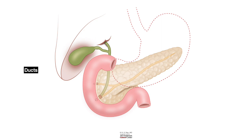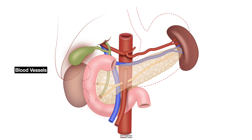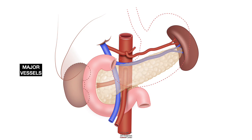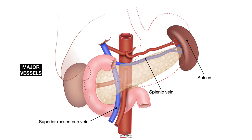Next, let us look at the blood vessels. We want to learn the relationship of all these blood vessels in relation to the anatomy of the pancreas — the head, neck, body, and tail. The spleen drains into the splenic vein, which courses along the superior aspect of the tail and body of the pancreas, and joins the superior mesenteric vein, which drains the small intestine and the right-sided section of the colon. They join at the top of the neck of the pancreas to form the portal vein, which goes into the liver.